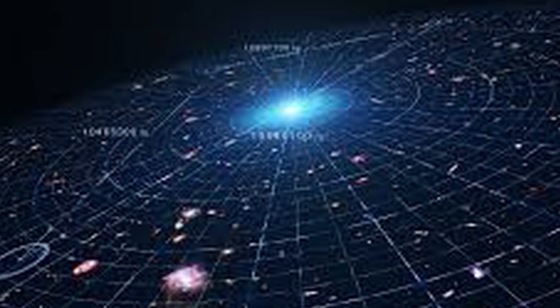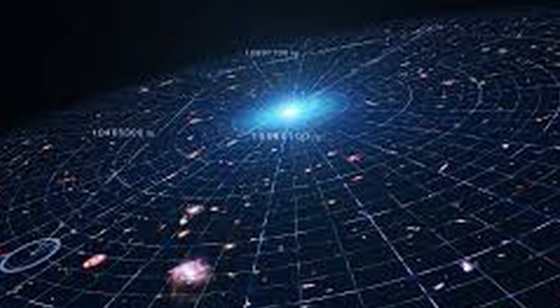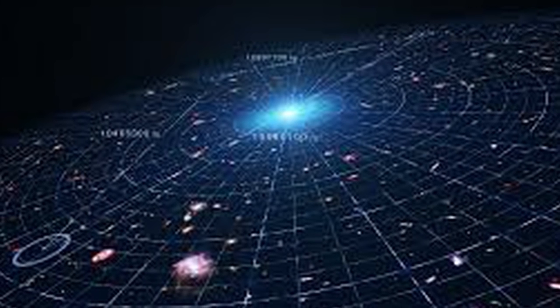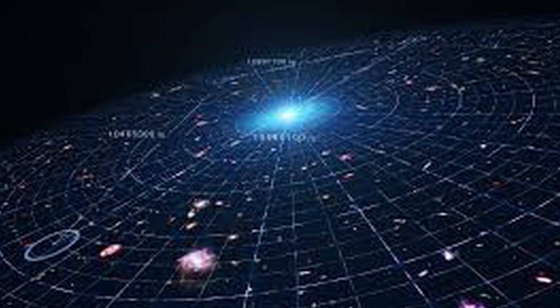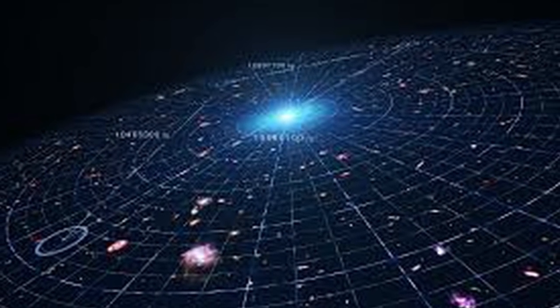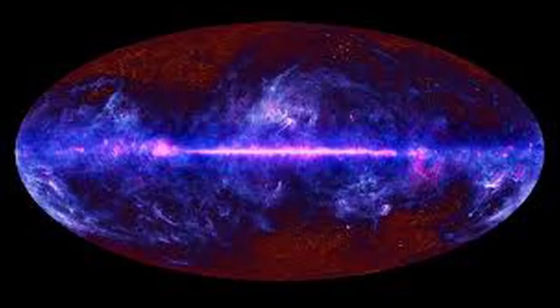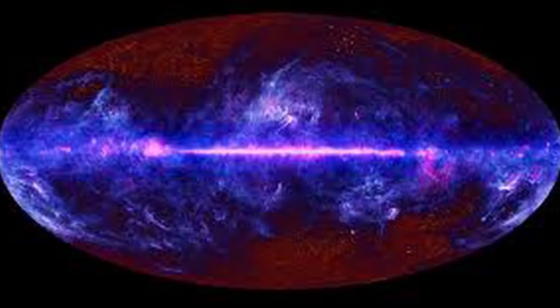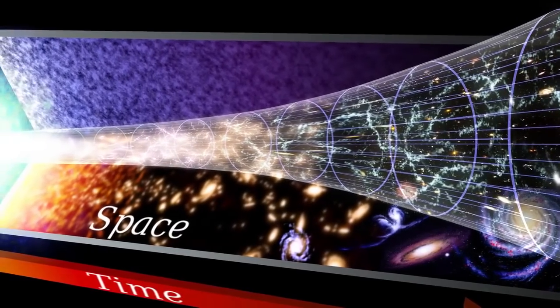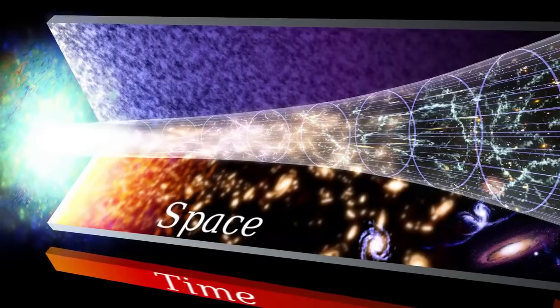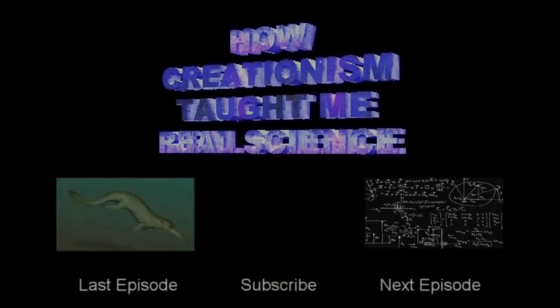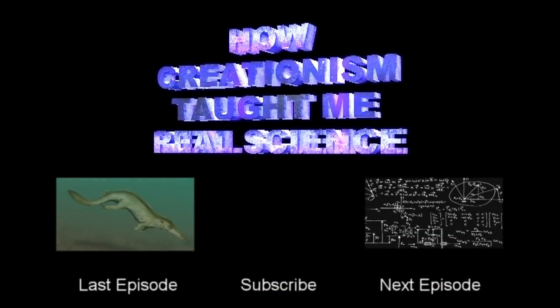As predictive and explanatory as it is, the Big Bang Theory is not a perfect model. As a result, like any scientific theory, it has been revised and will continue to be revised as we learn more about the universe which allows us to test more of its predictions. Regardless of this, the physics behind it are the same physics that send people to the moon and allows you to access the internet with the device you're watching this video on. Perhaps one day it will be replaced by a more explanatory and predictive model, but for now, it is another example of how creationism taught me real science.